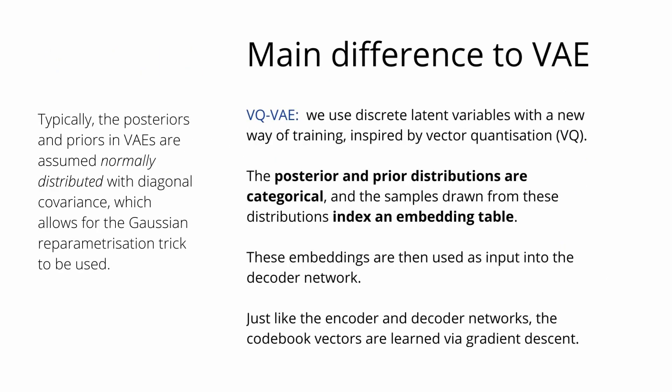Let's summarize before we dive into the detail. What is the main difference to the classical variational autoencoder? Normally, the posteriors and priors in a VAE are assumed to be normally distributed Gaussians with some diagonal covariance, which allows for the Gaussian reparameterization trick. With vector quantized models, we now have discrete latent variables — we go from continuous to discrete latent variables with a new way of training inspired by vector quantization. The main point is that the posterior and prior distributions are now categorical, not Gaussian.